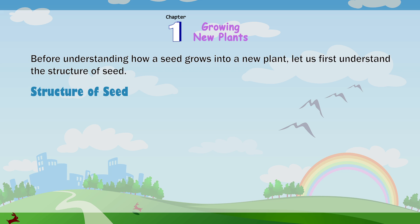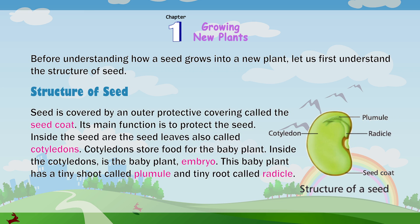Structure of a seed. A seed is covered by an outer protective covering called the seed coat. Its main function is to protect the seed. Inside the seed are the seed leaves, also called cotyledons. Cotyledons store food for the baby plant. Inside the cotyledons is the baby plant, called the embryo. This baby plant has a tiny shoot called the plumule, and a tiny root called the radicle.